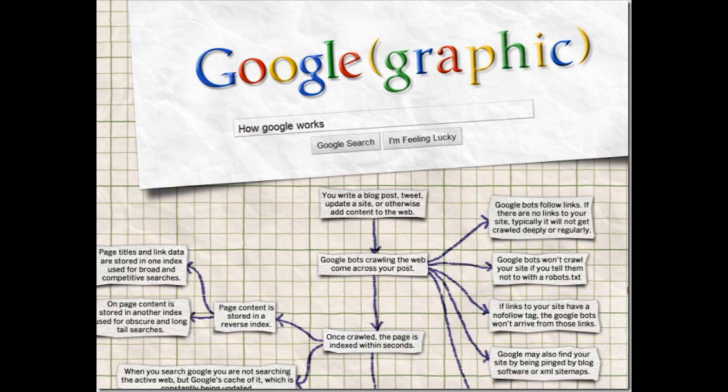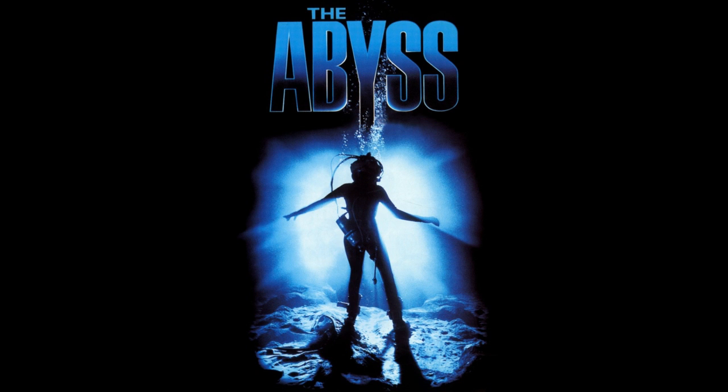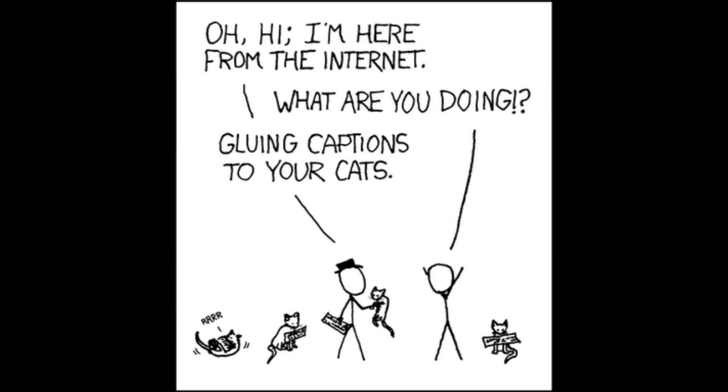We refer to this unindexed part of the internet as the deep web. In years past, it was also referred to as the invisible web. In essence, we are referring to internet resources such as websites which are not found by search engines.